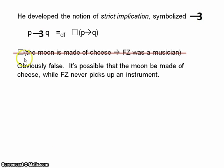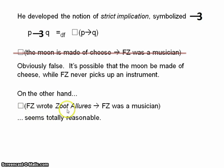So, that conditional is rendered false on strict implication. On the other hand, for an example of a conditional which would be true on strict implication, take if Frank Zappa wrote Zoot Allures, then Frank Zappa was a musician. Well, that seems to be totally true, totally reasonable, because Zoot Allures is a music album. So, if Frank Zappa wrote that, then he was surely some sort of musician. Surely, that indeed is necessarily true.